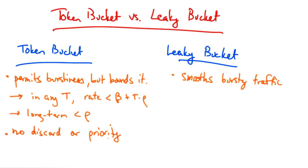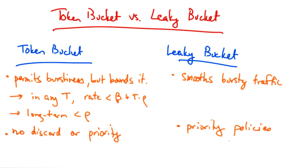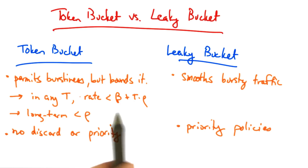Token buckets have no discard or priority policies, whereas leaky buckets typically implement priority policies for flows that exceed the smoothing rate. Both are relatively easy to implement, but the token bucket is a little bit more flexible since it has some additional parameters that we can use to configure burst size.